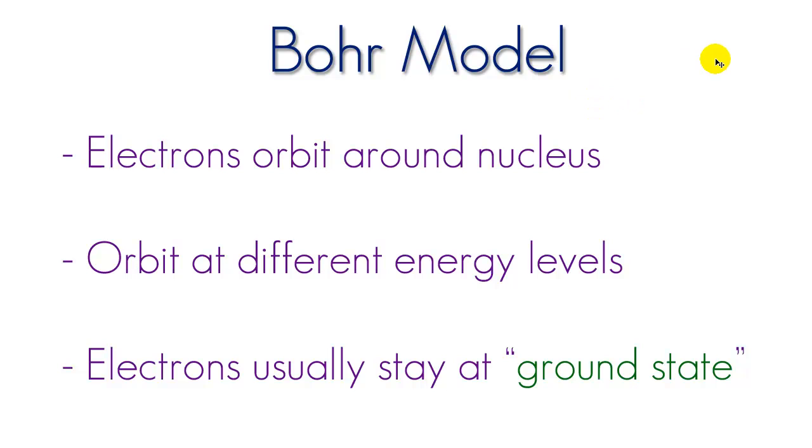So the Bohr model pretty much says three main things. First, the electrons spin, or he says orbit a lot, around the nucleus, pretty much if you think of planets orbiting around the sun, the exact same idea. Also, they only orbit at specific distances, and he called these distances energy levels, or energy shells. So pretty much he's saying, okay, an electron can be in these areas, but they can't be in between.